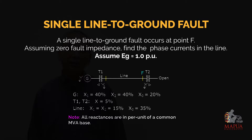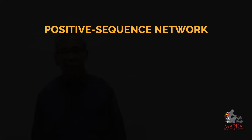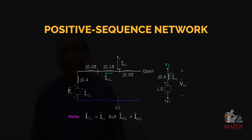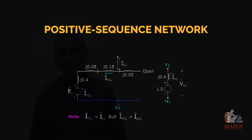Considering the location of the faulted point, we can now redraw the positive sequence network following the one-line diagram. This represents the positive sequence network with the positive sequence reactances, the generator, and the location of the faulted point, called F1. This positive sequence network can be represented by an equivalent Thevenin circuit with terminal F1 and neutral reference N1, a generator value of 1 per unit, and j0.6 as the sum of all impedances in the positive sequence network.